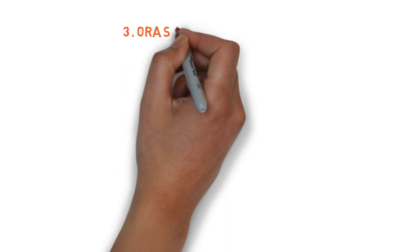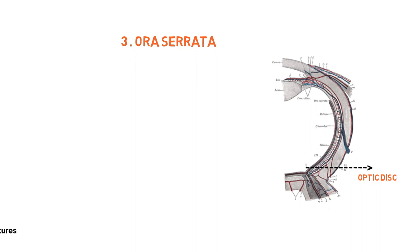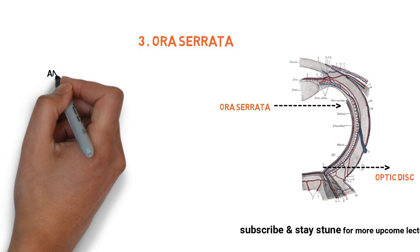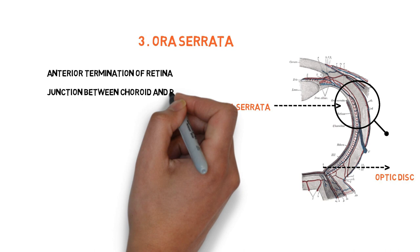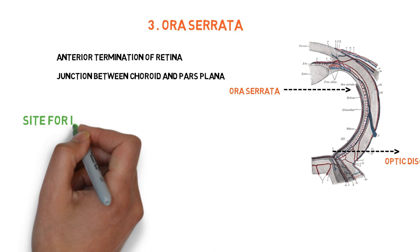The retina extends from the optic disc to the ora serrata. The ora serrata is the anterior termination of the retina — it is the junction between the choroid and the pars plana. This point is important because it is used as the site for intravitreal injection.